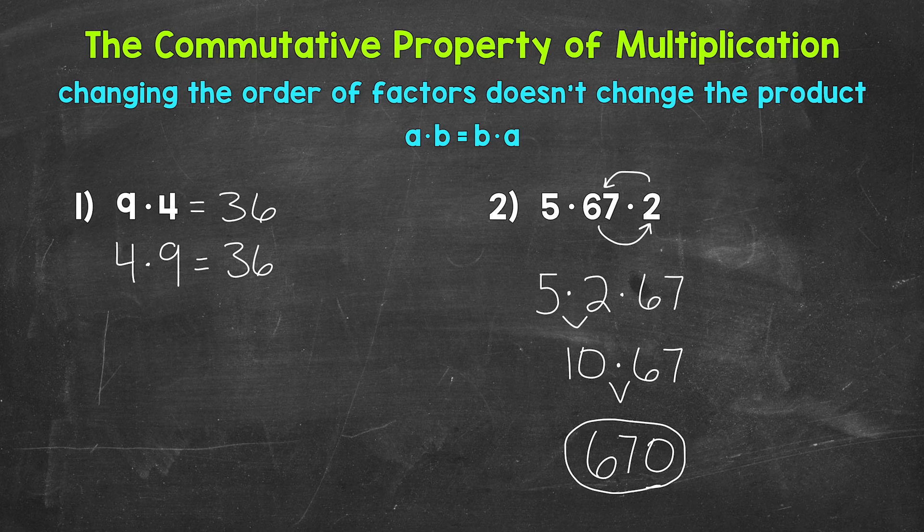So we used the commutative property in order to change that order, and we were able to do 5 times 2, which gave us that 10, and then multiplied the 10 by the 67, instead of starting with 5 times 67.